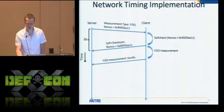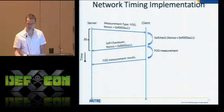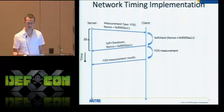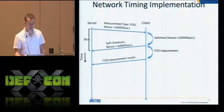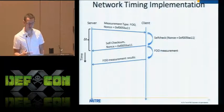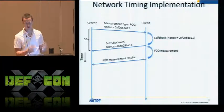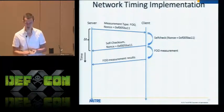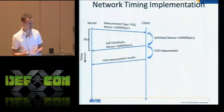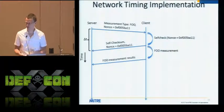Under normal circumstances, the self-checksum looks like this: the server sends a nonce to the client, the client uses it as the seed to its self-check, and then the self-check result goes back to the server. The server incorporates the total network round-trip time it took for the client to respond. If the checksum is correct and the time was within acceptable limits, the server believes the client and trusts the subsequent measurement results.